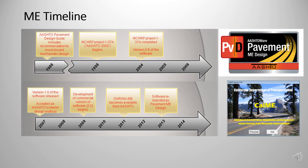A glance at mechanistic empirical development history shows that the concept started back in the 1980s. An NCHRP study — National Cooperative Highway Research Program 1-37A — was completed in early 2000. AASHTO adopted the approach in 2007 and made the research into a practical tool, which later was called AASHTOWare Pavement Design. At the same time, California started its own study in early 2000, and an ME version called CAL-ME was developed by UCPRC, the University of California Pavement Research Center. Caltrans adopted the ME method in 2005.